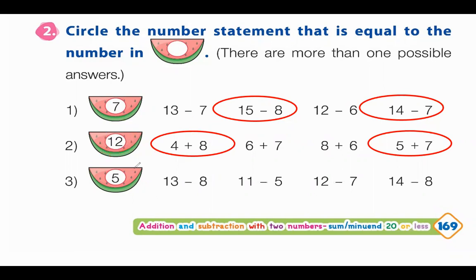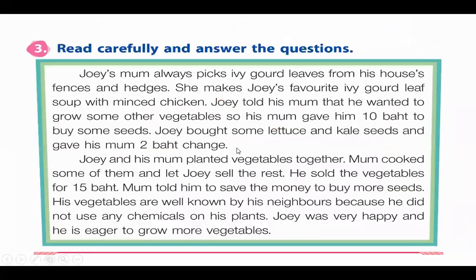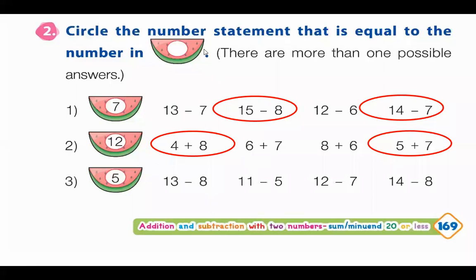Next we have number 3: find the number statement that is equal to 5. Let's see: 13 minus 8, 11 minus 5, 12 minus 7, and 14 minus 8. Circle the correct answers.